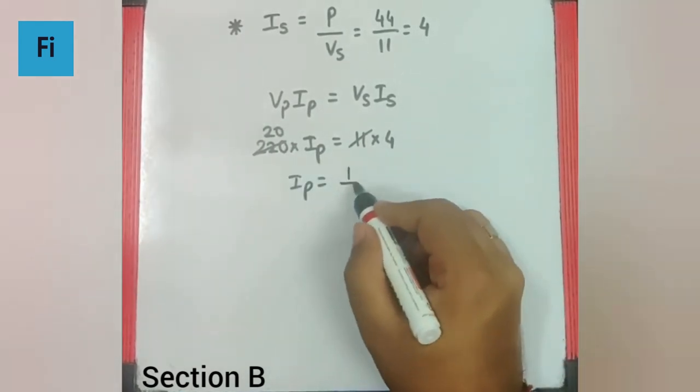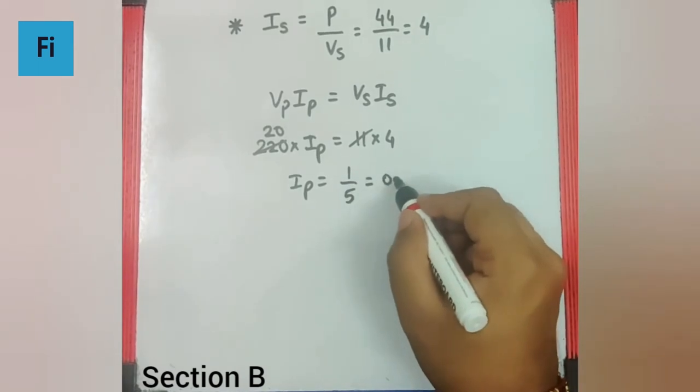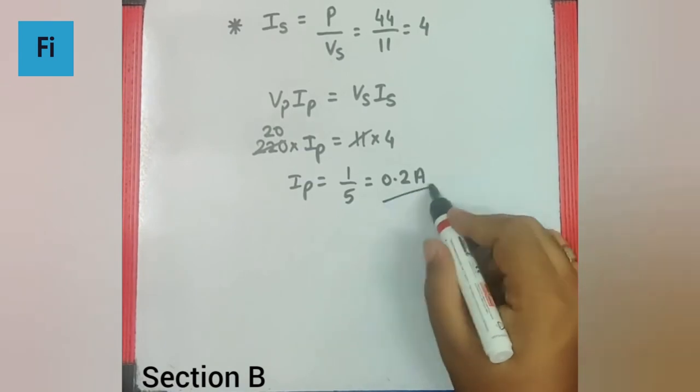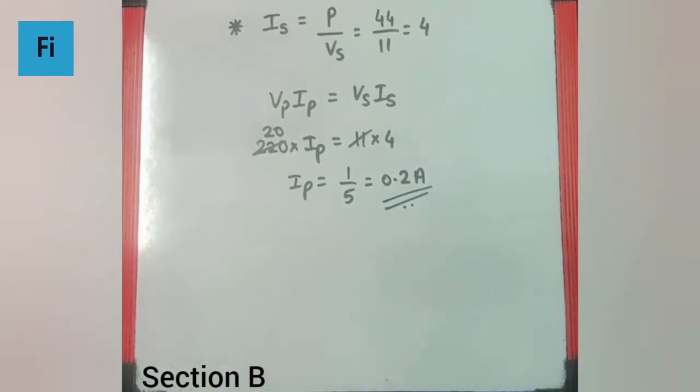So this will be making it 20, so current in the primary circuit is 4 by 20 which is 1 by 5 that is 0.2 ampere and that is going to be our final answer.